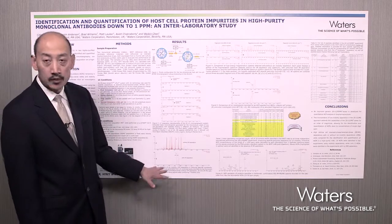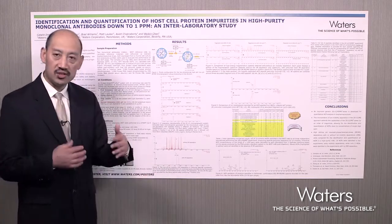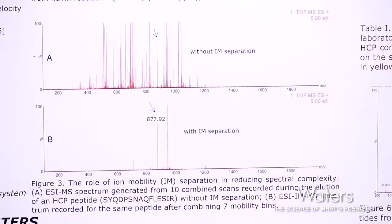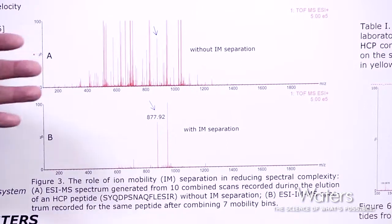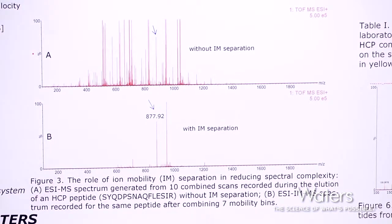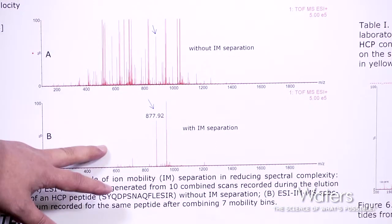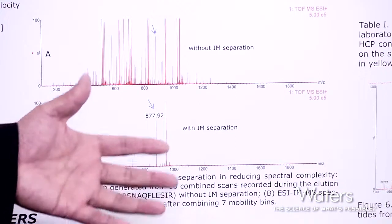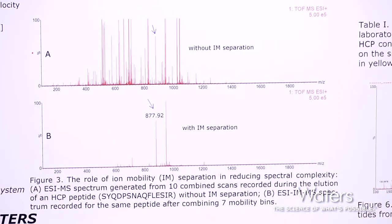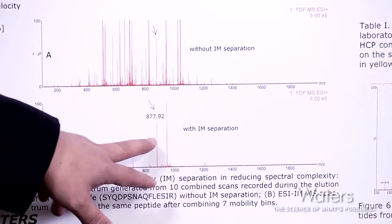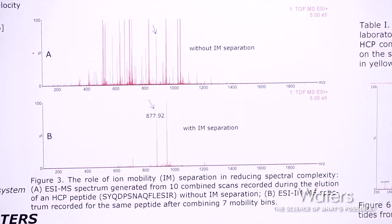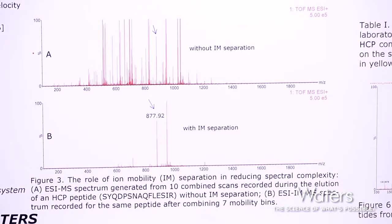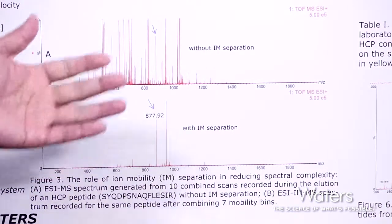This is shown in figure three, where we compare the same retention time window of the mass spectra with and without ion mobility separation. The top panel is without mobility separation and the bottom is with. You can clearly see that we remove a lot of interfering species surrounding the host cell protein peak, highlighted by the blue arrow. In this way, we can be much more targeted and focused to more easily identify the host cell proteins.